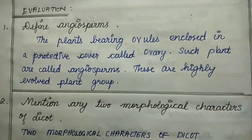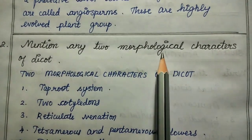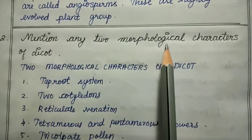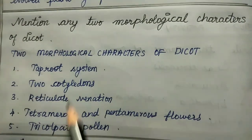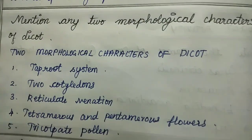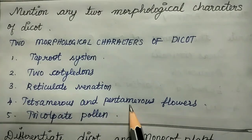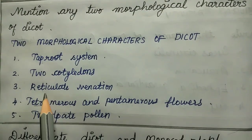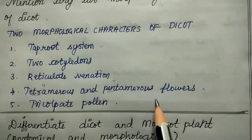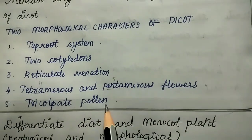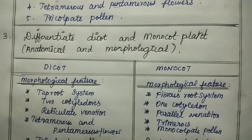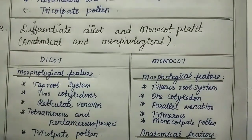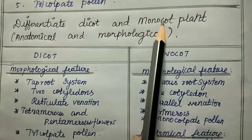Second question: mention any two morphological characters of dicots. Dicots have a taproot system, two cotyledons, reticulate venation, tetramerous or pentamerous flowers, and tricolpate pollen.